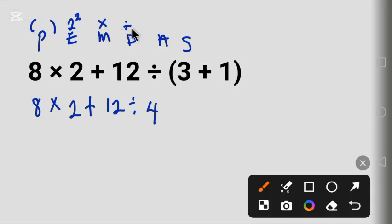We evaluate from left to right. Looking at this question from the left, multiplication came first, so we will solve multiplication before division. 8 times 2 is 16.